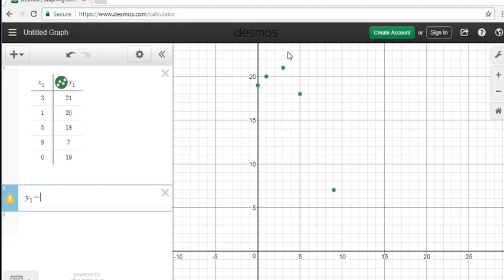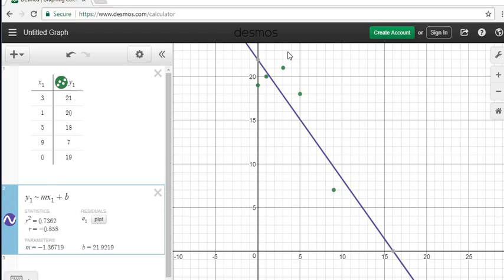If you wanted to see a line, we could put in mx plus b. I forgot to put my x1—sorry, that was my fault, I forgot to put a subscript. With this, you can see that our r is negative 0.85, which isn't terrible, but our R-squared is 0.7362, so only 73.6% of the variability is explained by this model.